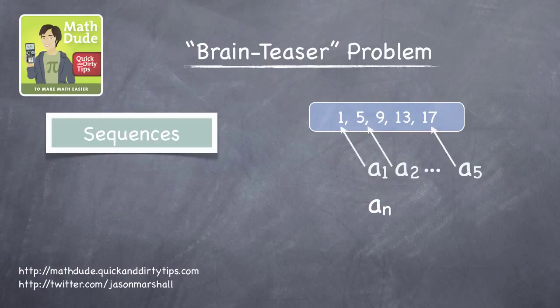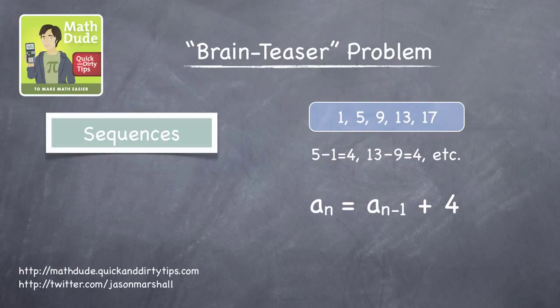Since the difference between successive elements in our sequence is 4, one way to represent all the elements is to write a sub n equals a sub n minus 1 plus 4. So, to find the second element, just plug in n equals 2. a sub 2 equals a sub 1 plus 4, which is 1 plus 4, that's 5. It works.